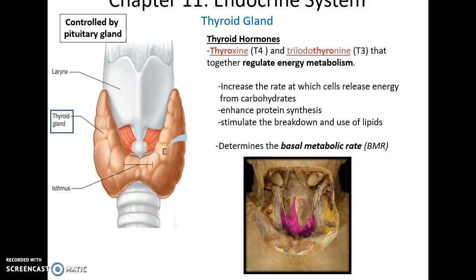The thyroid gland is found under the thyroid cartilage. It produces thyroid hormones — thyroxine and triiodothyronine — which help regulate overall energy metabolism, increase the rate at which cells use energy from carbohydrates, increase protein synthesis, and aid the breakdown and use of lipids, essentially setting the basal metabolic rate. It would be much higher in people who can eat anything and not gain a pound, and much lower in people who have trouble with weight.